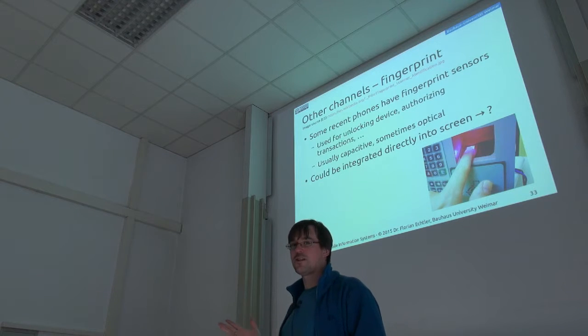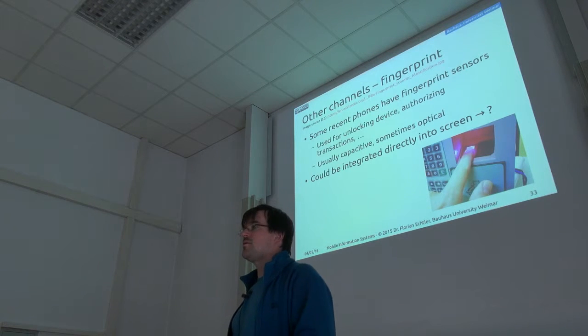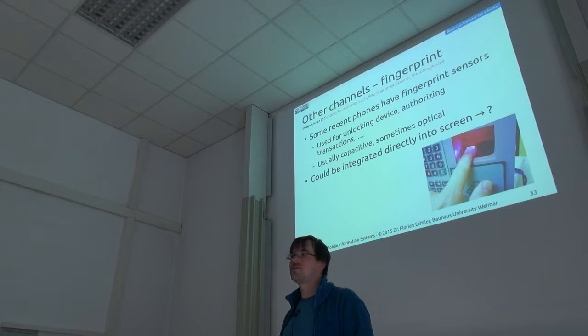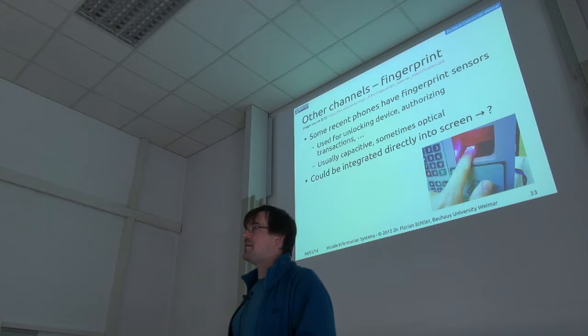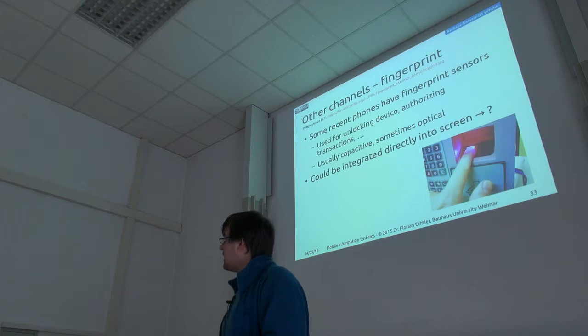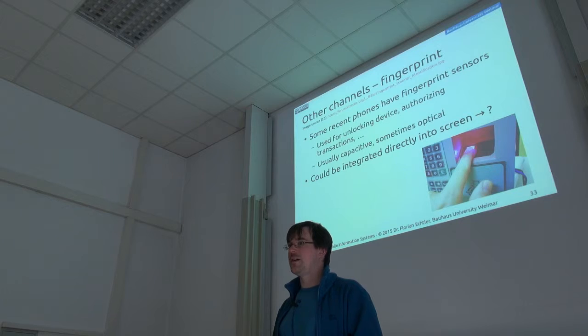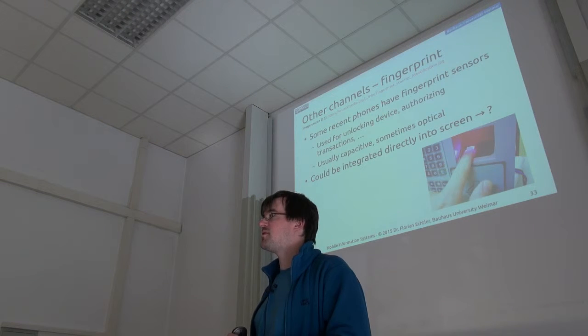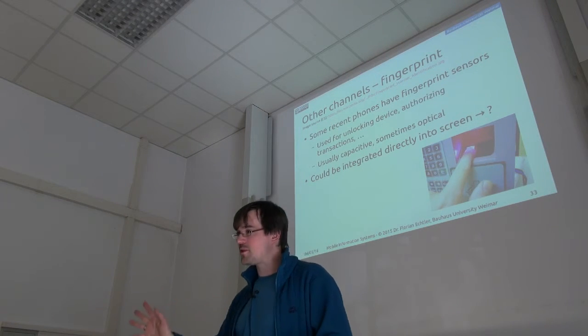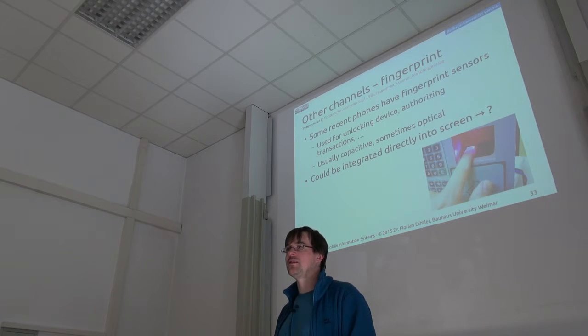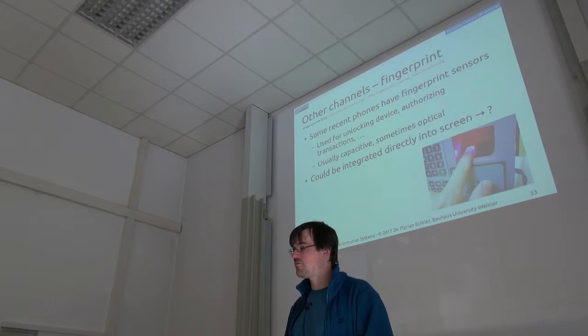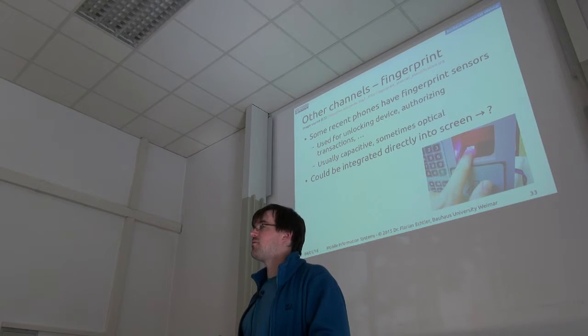What's also kind of an I.O. channel is the fingerprint. You can use that to unlock your phone in modern devices. You can use it to authorize financial transactions, maybe. It's mostly a separate device. Yes, you could actually consider a scenario where you integrate a fingerprint sensor directly into the screen and across the whole screen. So, the entire screen is at the same time a fingerprint sensor. Can you think of any additional features except security which that would get you?